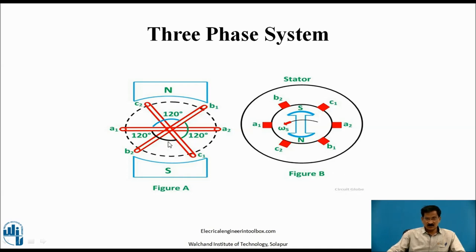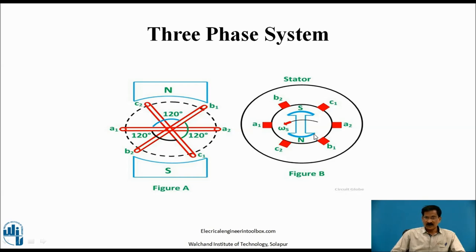In figure A, these three coils are rotated in an anticlockwise direction with an angular velocity of omega radians per second. Here the magnetic field is stationary and we are rotating the three coils. In figure B, you will find the stator having a stationary winding — again three windings overlapped with each other, displaced by 120 degrees. At the center, the rotating part is the permanent magnet. The generation of EMF is based on Faraday's law of electromagnetic induction due to the cutting of flux.